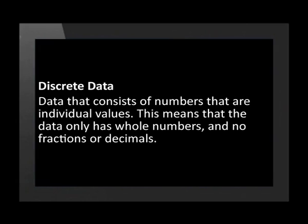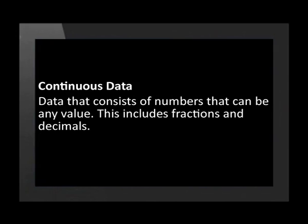Discrete data is data that consists of numbers that are individual values — meaning the data only has whole numbers and no fractions or decimals. Continuous data is data that consists of numbers that can be any value, including fractions and decimals.